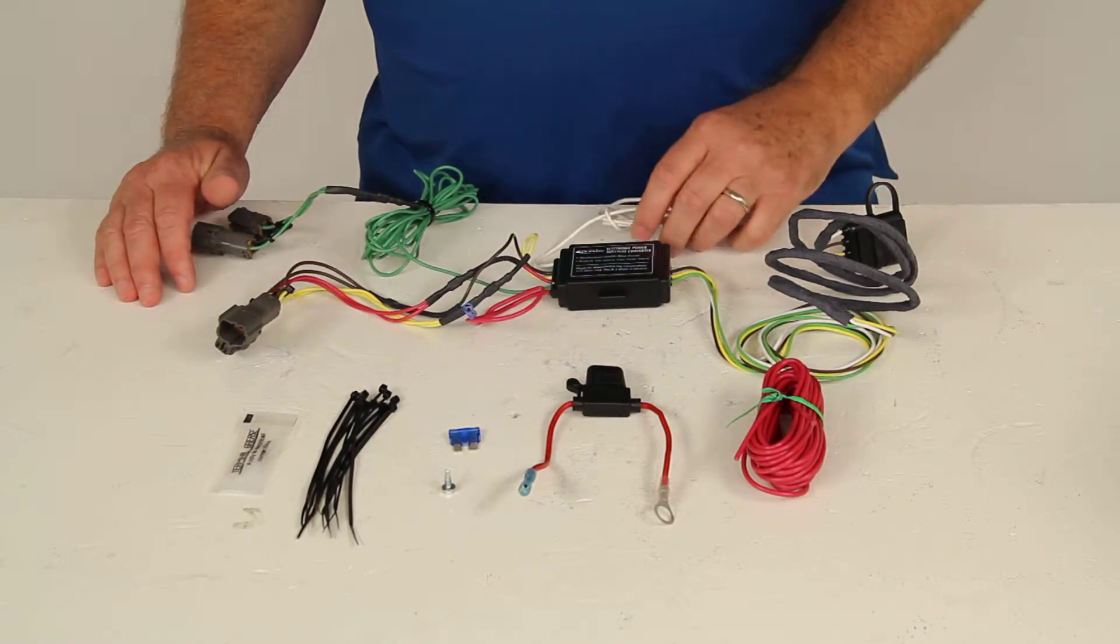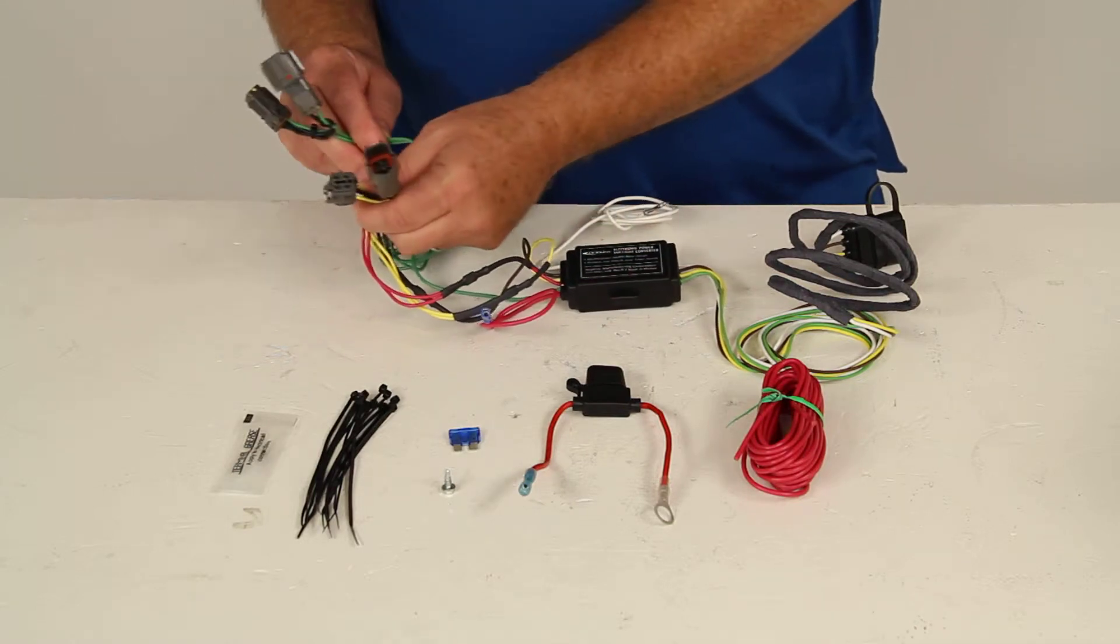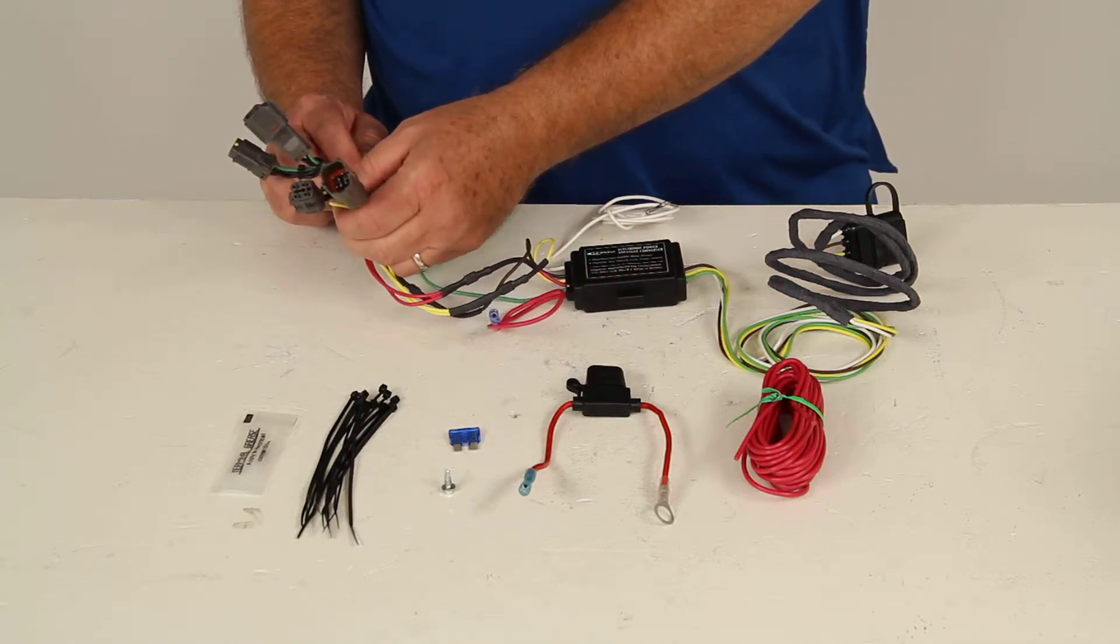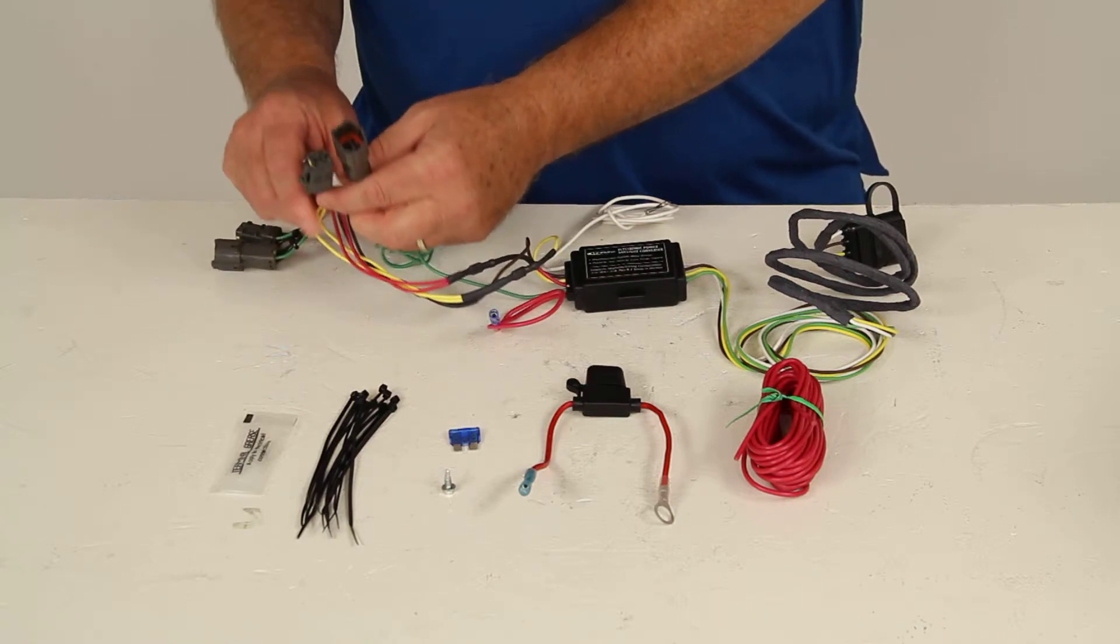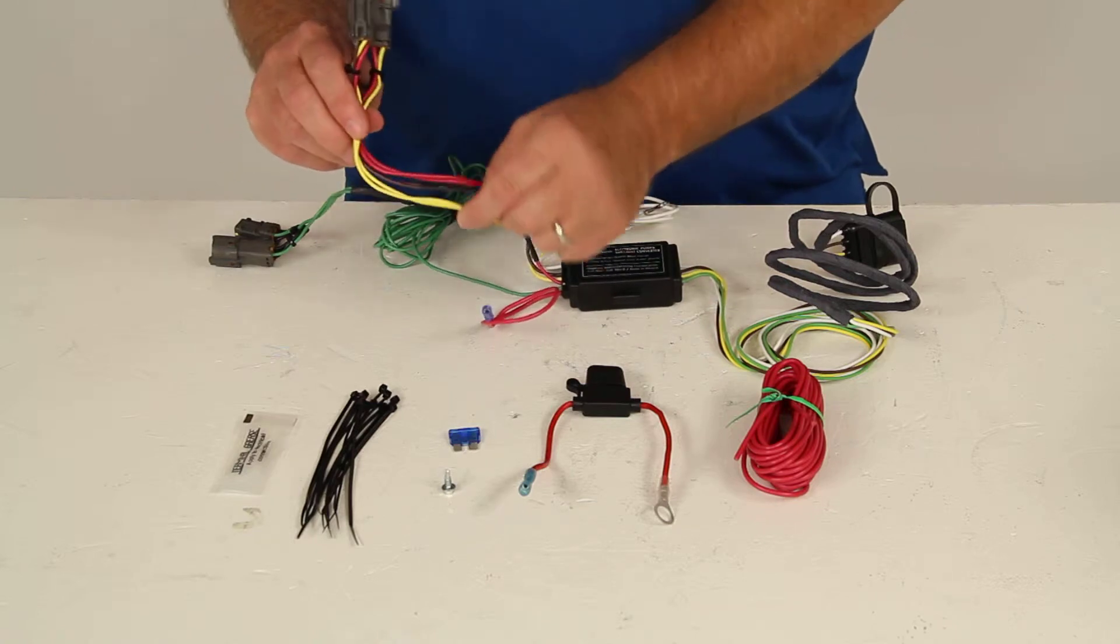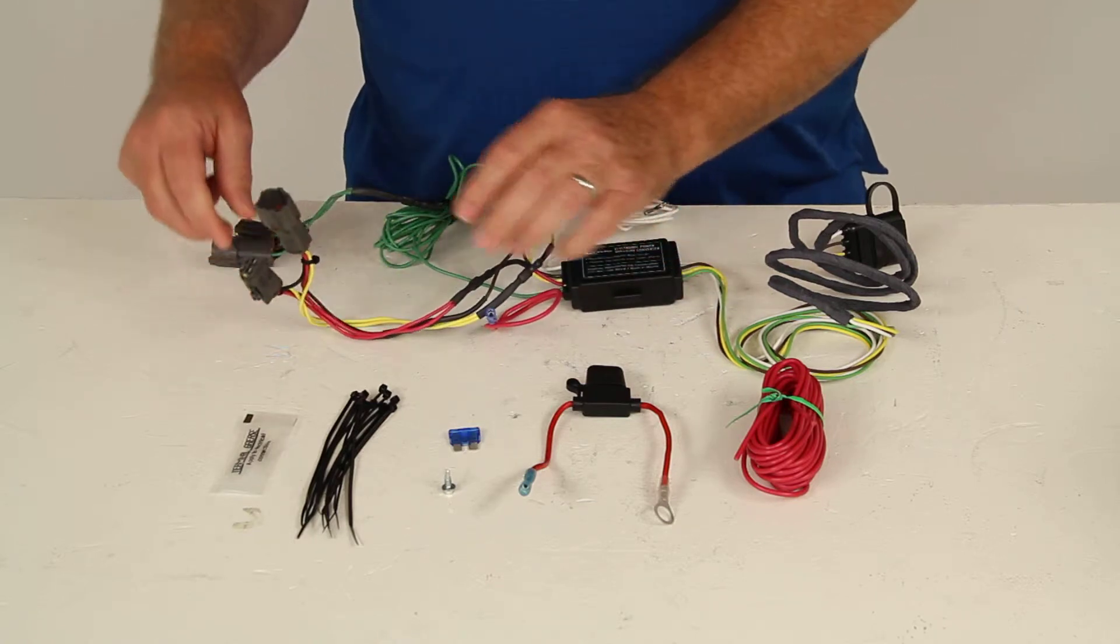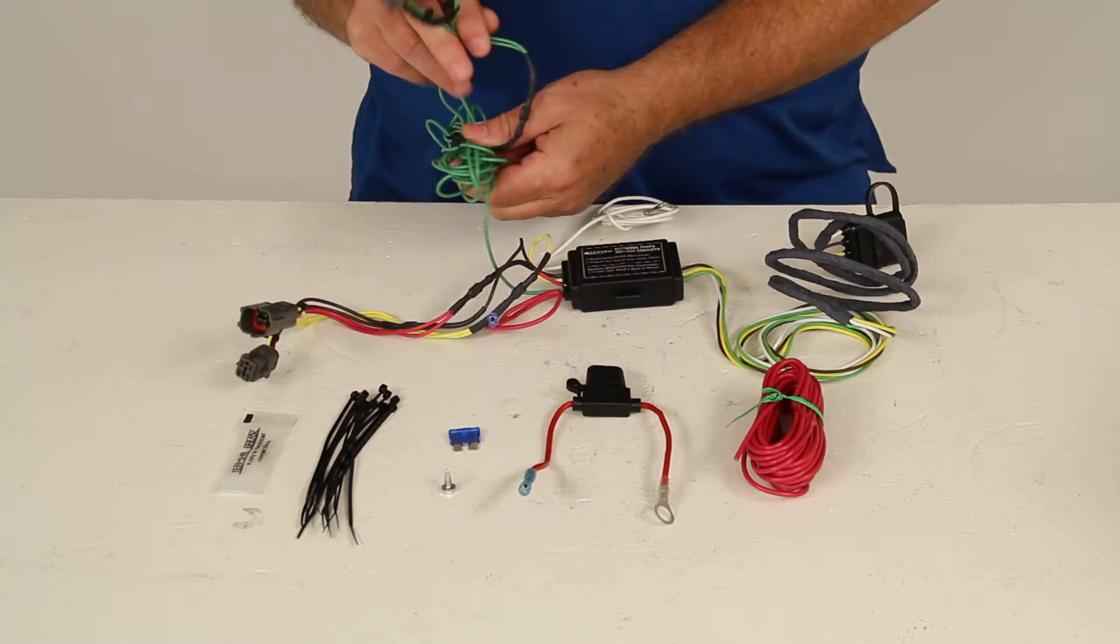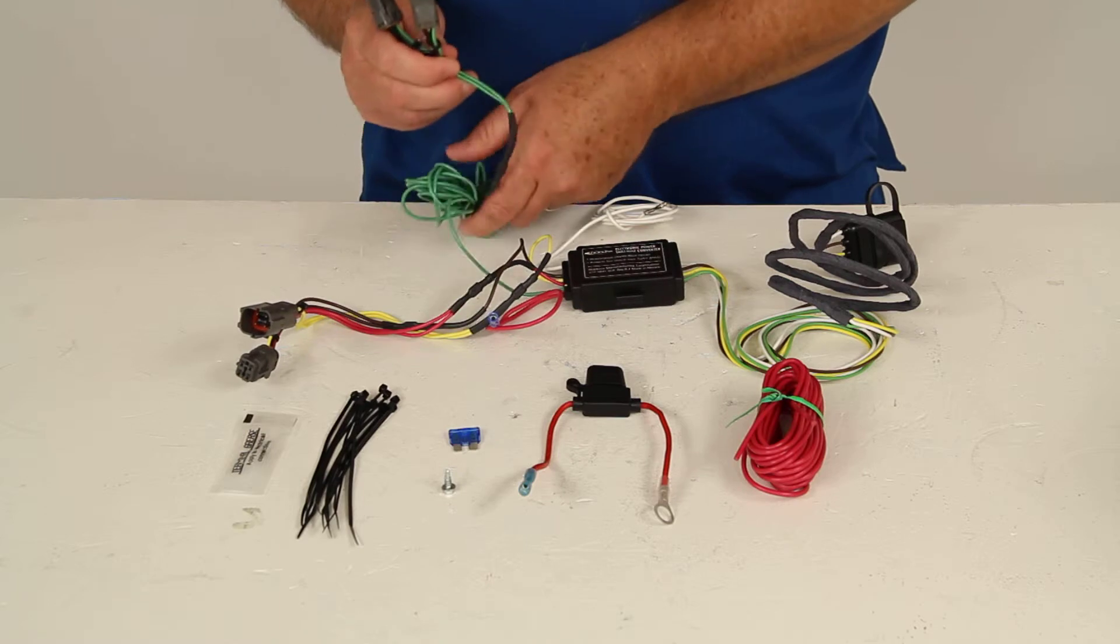Now when you go to attach this, what you do is go to the back of your vehicle and these connectors right here will attach to the back of your tail lights. You'll pull the connectors off your tail lights, these will plug into that. You'll notice there's two sets. This one here with the yellow wires and the connectors will go to your driver side, and then the longer wire, the green wire right here with the connectors, this will go to your passenger side. Same way you'll plug these in behind the tail light.